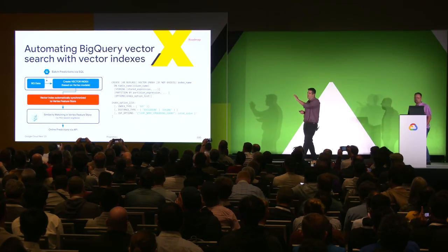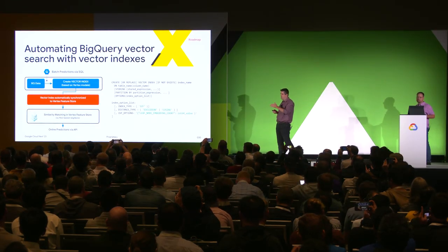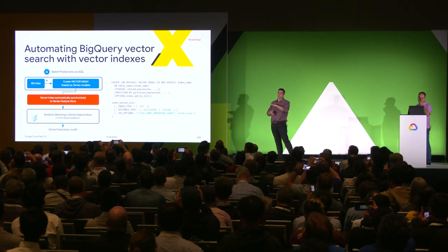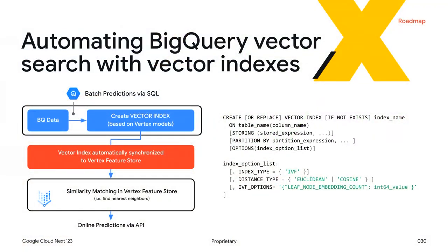Everything you just saw exists today — you can go use it. Coming very soon, we are looking for preview customers: by the end of this year, we will also support vector indexes directly within BigQuery. You'll be able to, using SQL, define a vector index on a table, point to the embeddings, and we'll keep those updated in an index behind the scenes providing approximate nearest neighbor search.